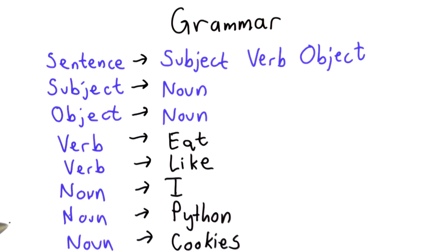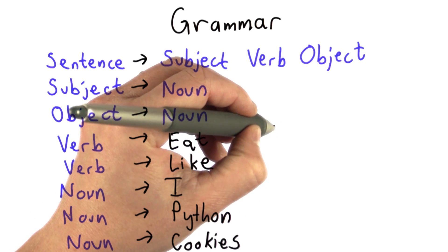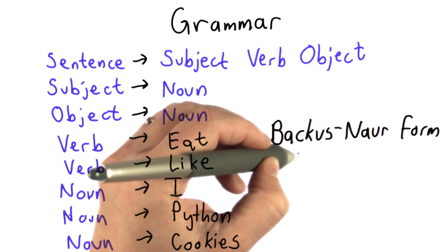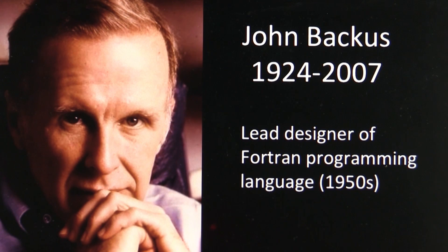The way we're writing grammars here is a notation called Backus-Naur Form. This was invented by John Backus. John Backus was the lead designer of the Fortran programming language back in the 1950s at IBM. This was one of the first widely used programming languages.